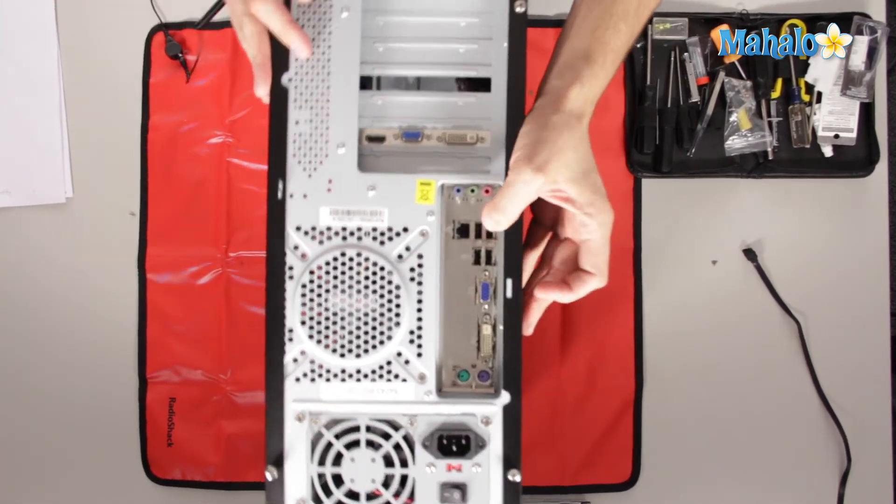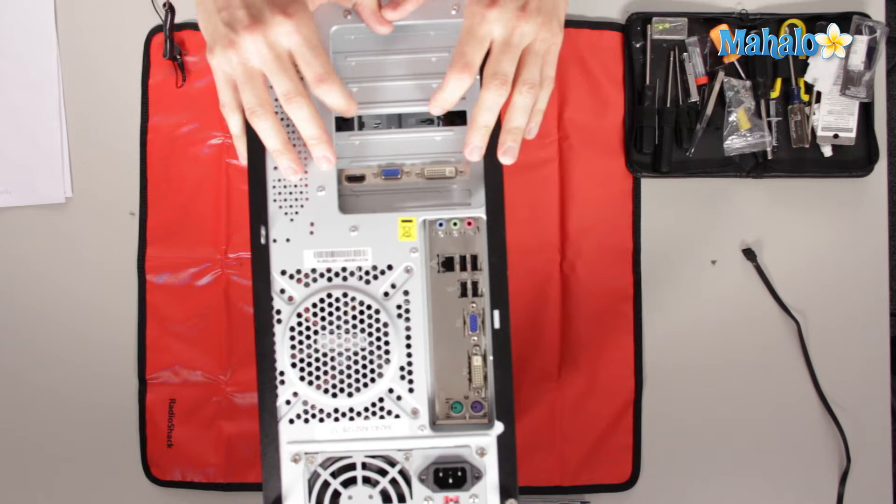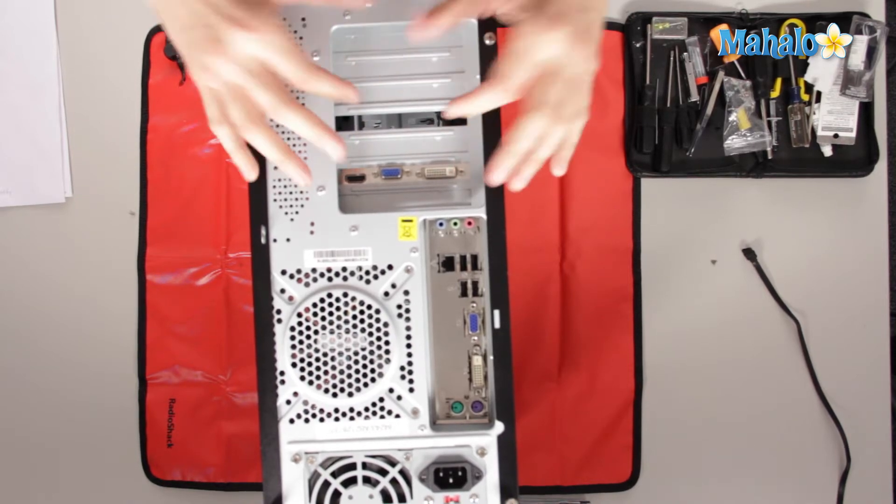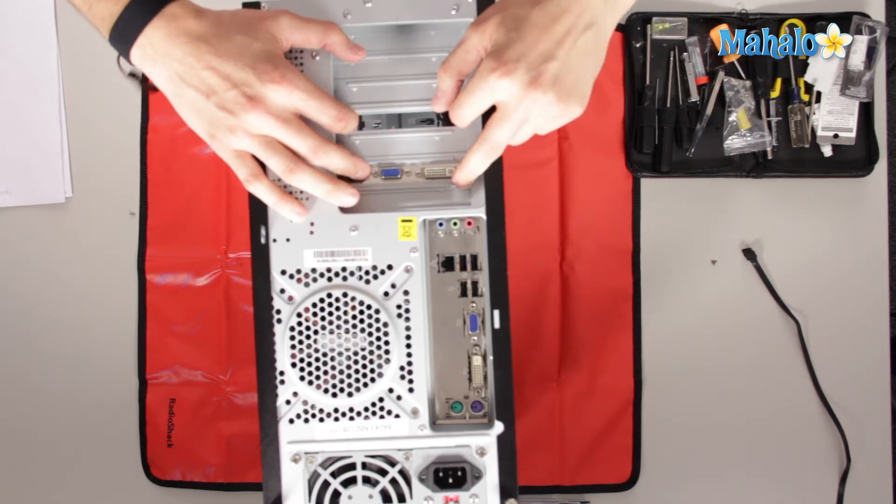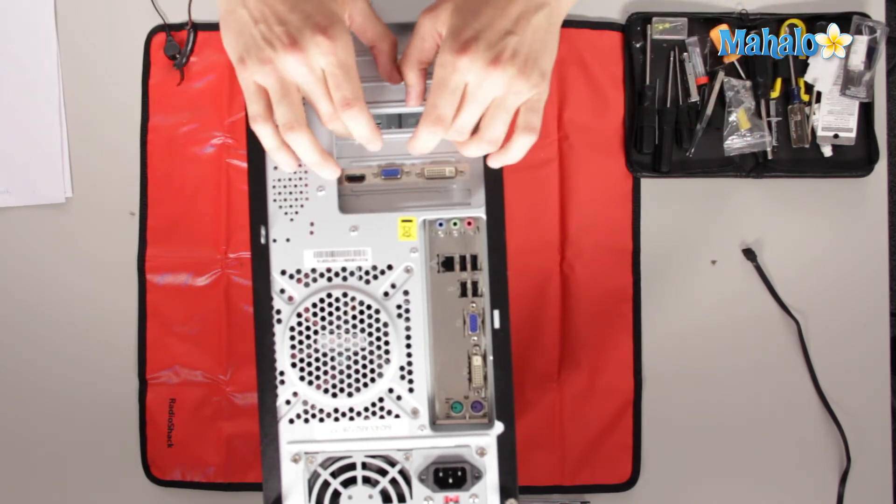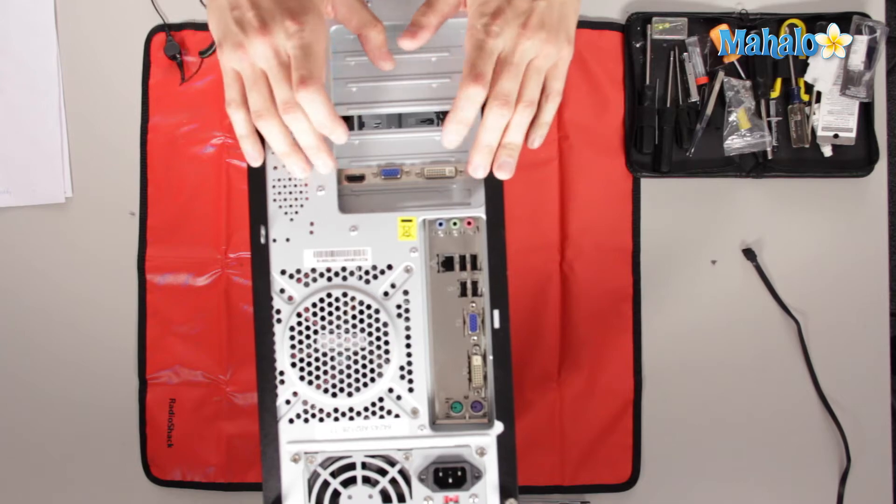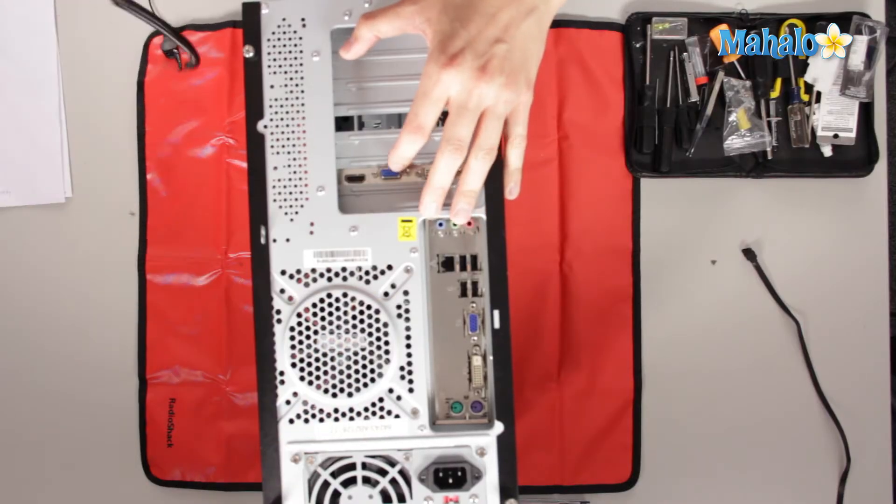What I mean by that is, this expansion port right here, the back has been taken off, which means, let's say, maybe for instance, we had two video cards at one point, or we just had a different card on here. We removed the card, now we have an empty space. This could prevent better airflow to your computer because air is escaping here instead of flowing all the way up to the back.